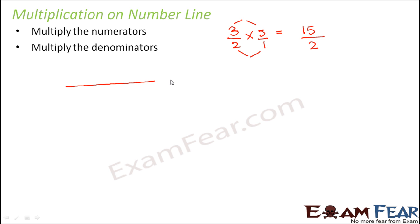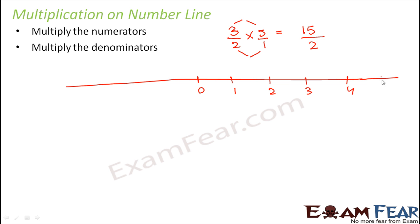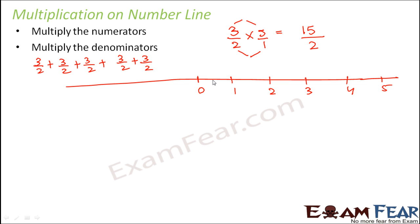Now if you want to look at this multiplication on the number line, here you go. Let's say this is 0, 1, 2, 3, 4, 5 and so on. So what does 3/2 into 5 mean? That means 3/2 is added 5 times — you take 5 jumps where each jump is 3/2.